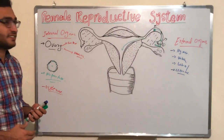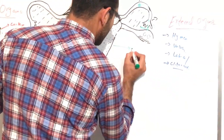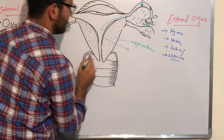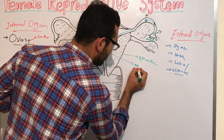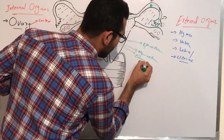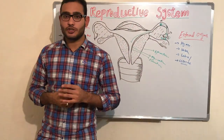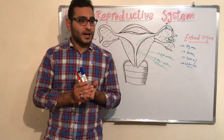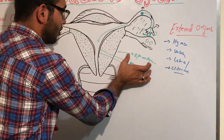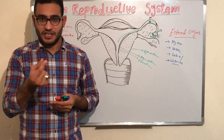The three layers of the uterus are: the outer layer is known as the perimetrium, the thickest layer is the myometrium, and the innermost layer is known as the endometrium. The uterus is the main place of growth of the fetus and embryo until delivery. The main function of the perimetrium is to maintain the shape and size of the uterus.